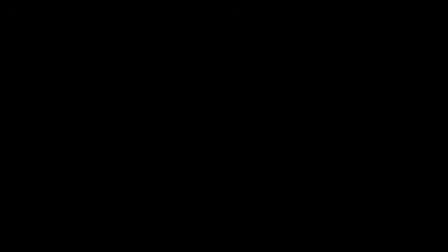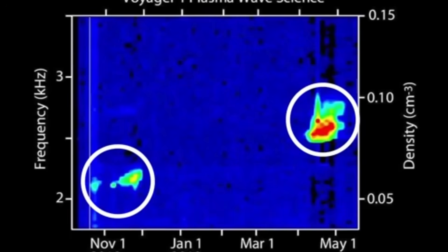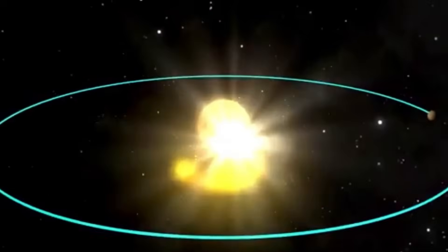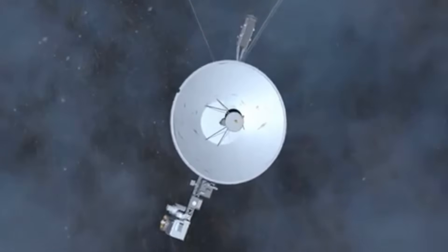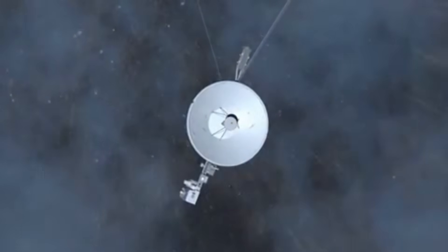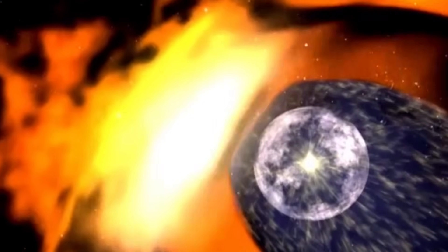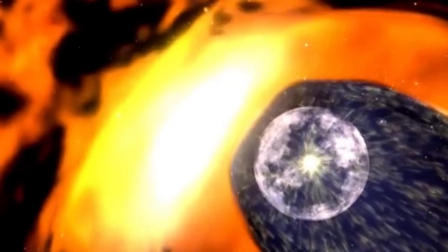What makes these readings so extraordinary is their pattern. In normal interstellar space, we'd expect random fluctuations caused by stellar winds and cosmic rays. Instead, Voyager detected what some researchers describe as structured discontinuities, as if the spacecraft is passing through distinct regions with different physical properties.